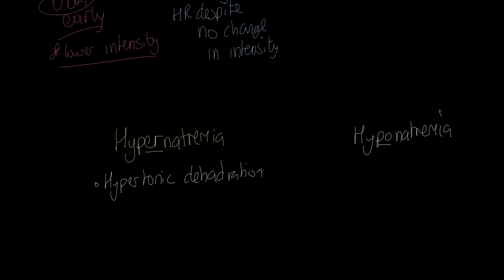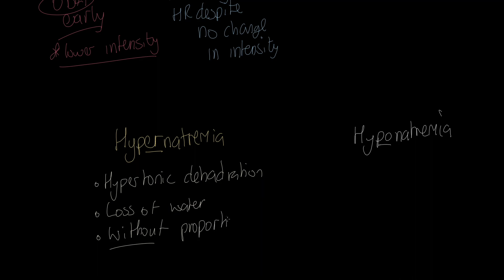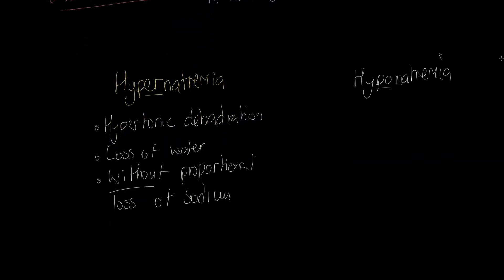What we mean by hypertonic dehydration is that we have a loss of water — no surprise, we are talking about dehydration. However, this happens without a proportional loss of sodium. You may be aware that when we sweat, we do pass electrolytes through the skin and they leave the body that way. But what we're saying here is that if hypernatremia occurs, it is because water is being lost but sodium is remaining in the body. This leads to excess sodium in the blood.